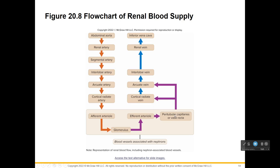Here is the flow of blood in the kidney system. From the aorta to the renal artery, which branches into segmental arteries, then interlobar arteries between the pyramids, then arcuate arteries above the pyramids, then cortical radiate arteries — now we're in the nephron: afferent arteriole, glomerulus, efferent arteriole, peritubular capillaries (also called vasa recta), which lead to the arcuate vein, interlobar vein, renal vein, and finally the vena cava.